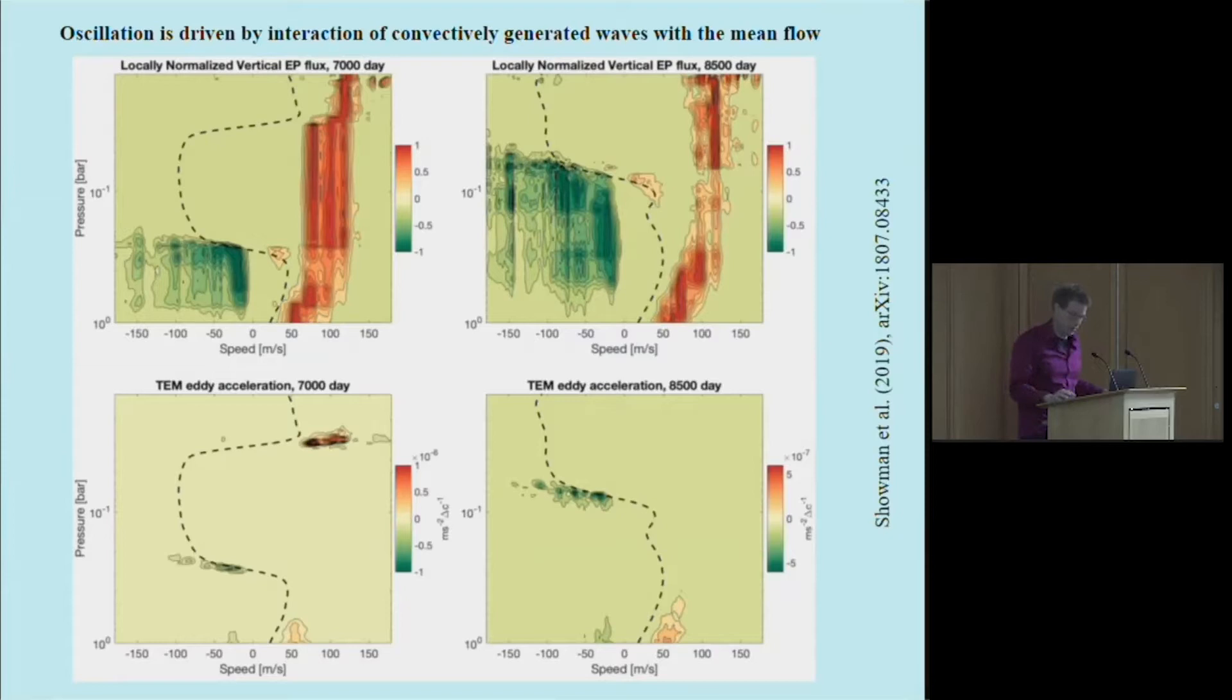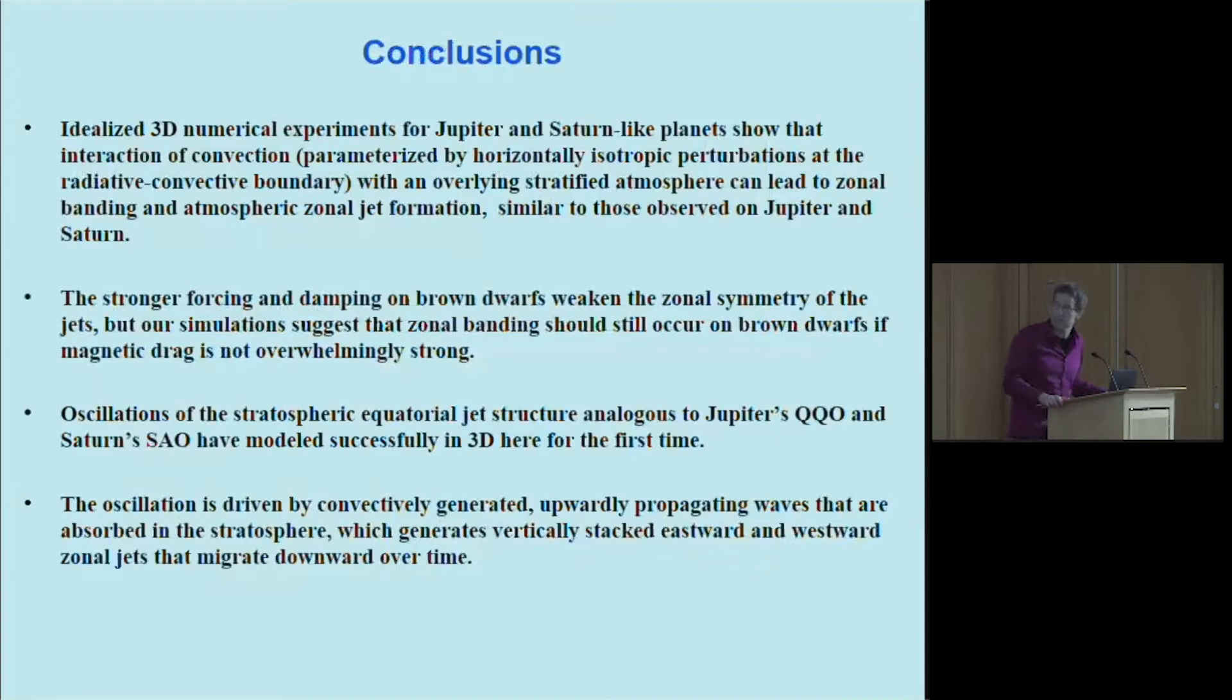This is a mechanism that causes the downward propagation in this class of model. This mechanism has been well known for the QBO for the Earth, but it's the first time this has been done for a giant planet. Just to sum up: hopefully I've convinced you that brown dwarfs, Jupiter, and Saturn have certain similarities. Numerical experiments for this class of bodies generally show banded clouds, a banded pattern in the dynamics, so we would expect even though brown dwarfs are strongly forced in the sense that they're very vigorously convecting, we still expect a banded structure for them. Some of our models are very Jupiter and Saturn-like as far as their zonal jet patterns, and we produce this QQO and SAO-like structure here for the first time due to the upward propagation of waves. Thank you.